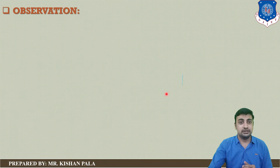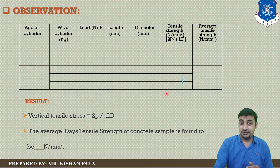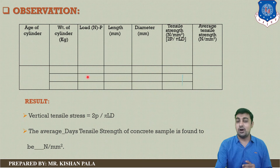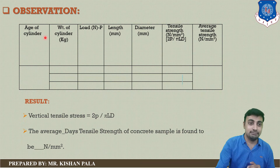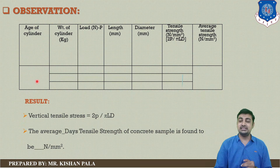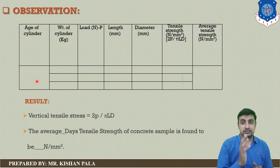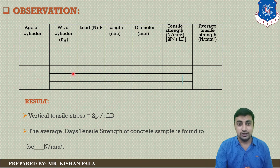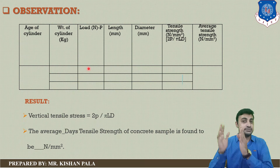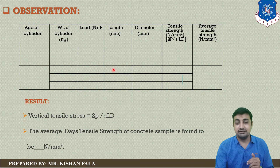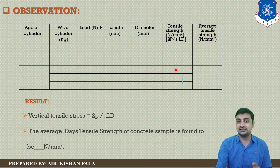Let us discuss the calculation to find the tensile strength of the concrete mass. Here you can see the observation table on the screen, which you will use to find out the tensile strength. You have to write down the age of the testing specimen (7 days or 28 days), the weight of the specimen, and the load at which the specimen fails.